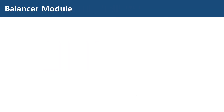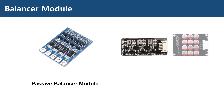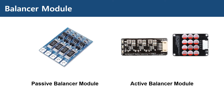Let me give you a brief introduction and comparison for the balancer module. This is a 4S passive balancer module. These large resistors shown in the figure dissipate power to balance each cell. These two modules are active balancer modules — the left one is an inductive type and the right one is a capacitive type. These active balancer modules achieve balancing through inductors and capacitors, as the name implies.